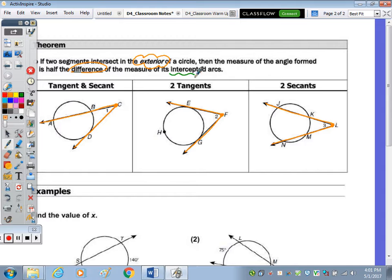Well, the intercepted arcs are the arcs that are within those two segments. So that would be AD and BD. So the measure of angle 1, and I'll call this X and Y, is half of X minus Y.